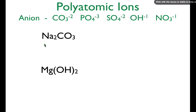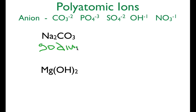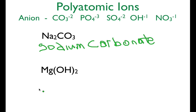Now we have our polyatomic ions. You need to recognize which ions are polyatomic. We have a single metal, and then more than one kind of atom as the anion — that's your hint. You need to be familiar with the polyatomics. Some common ones are carbonate, phosphate, sulfate, hydroxide, and nitrate. For sodium carbonate, we just write down sodium, and then carbonate — we don't change it to -ide. We just write down the full name of the polyatomic ion: sodium carbonate.